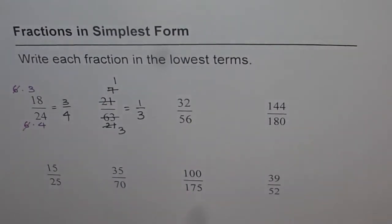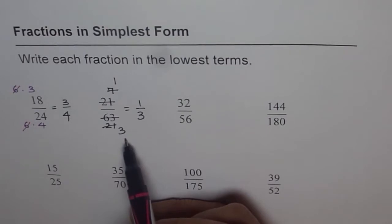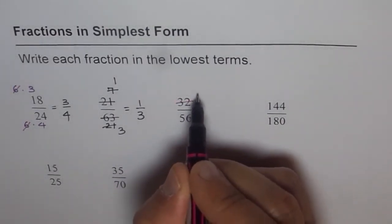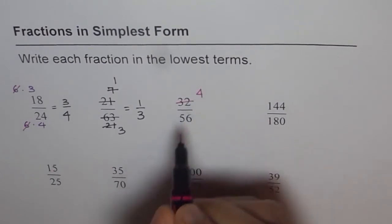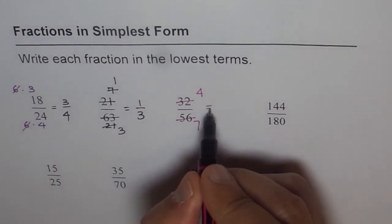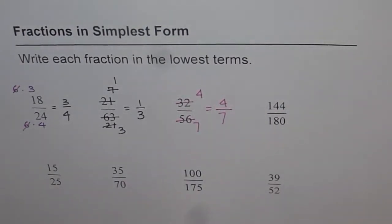So if I divide by 8, 8 times 4 is 32, I get 4 here. And 8 times 7 is 56. So I can write this as 4 over 7. So that one was fast since we got a bigger common factor.